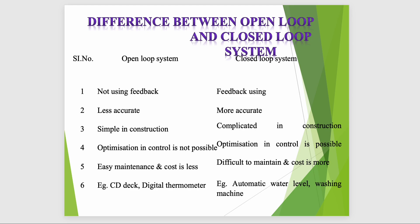If we want optimum control, it is not possible in the open loop control system. But with the closed loop system, we get the optimum solution. The open loop is very easy to maintain, while the closed loop is also easy to maintain but the cost of the closed loop system is very high. As an example of an open loop system: the digital thermometer. It checks the temperature of our body and reads 36 degrees, but it cannot give any feedback to change the body temperature — it simply shows the reading.